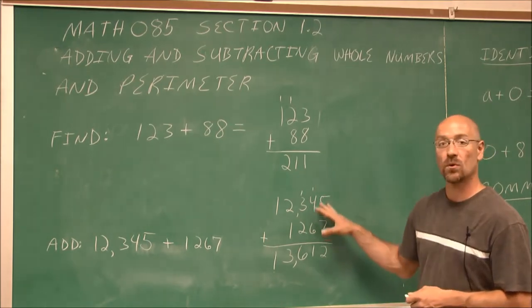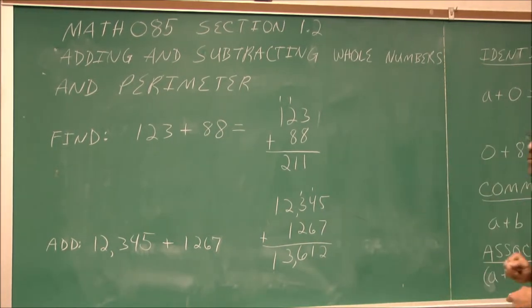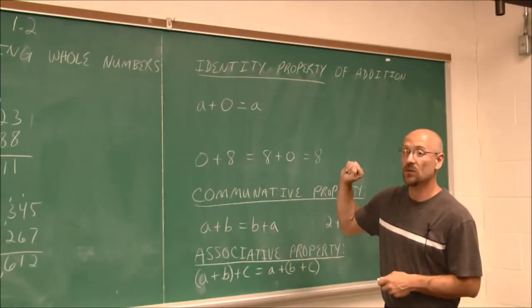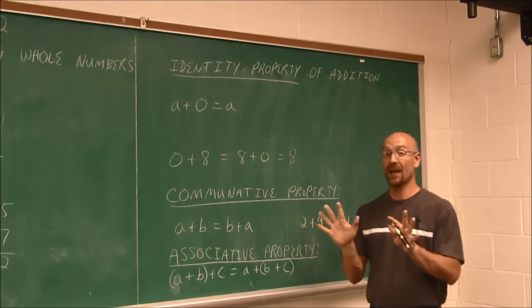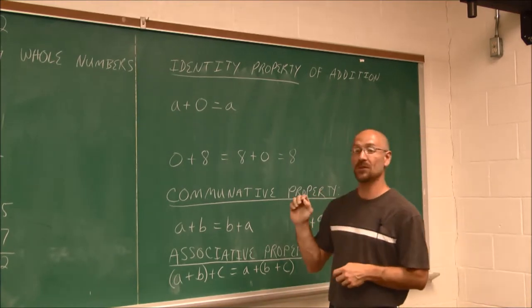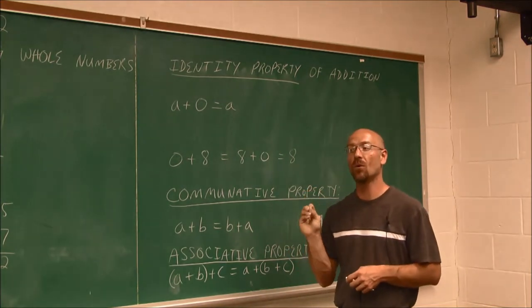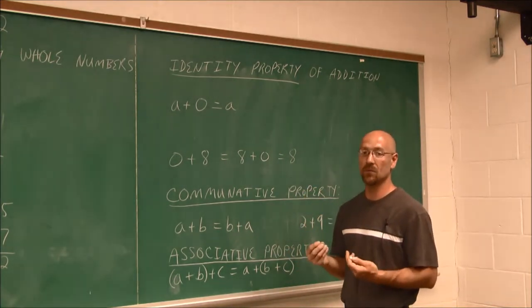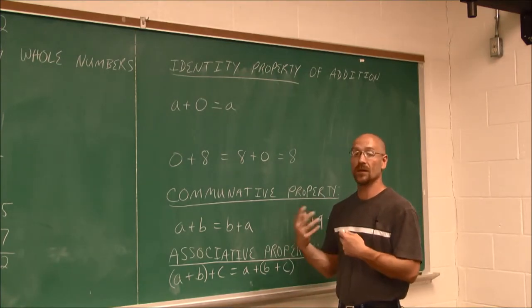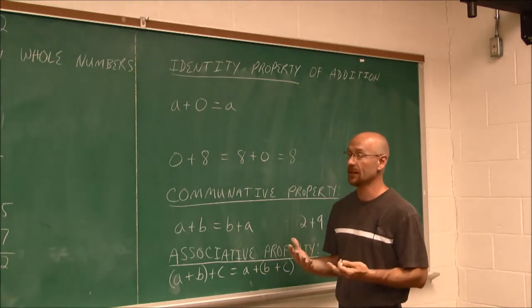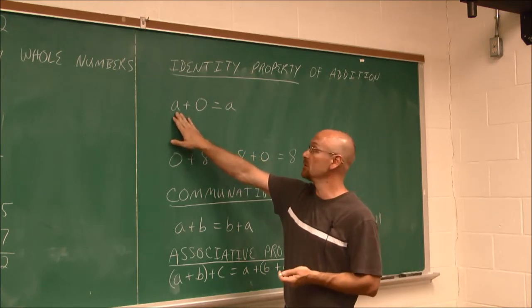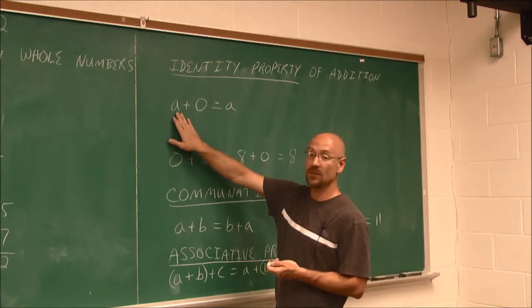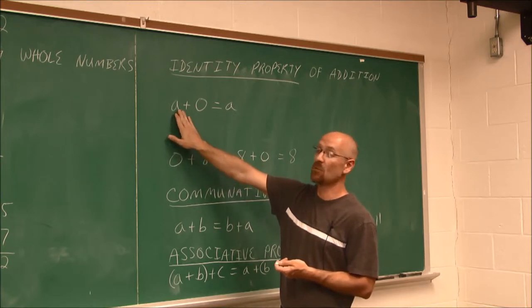Well, let's look at some properties of addition next. But before we do that, we have to introduce the term variable. Now, don't panic. It's OK. A variable is just defined as something that's holding the place of a number, a number we don't know or a number we're going to substitute in at a later time. As an example, this a here, generally we use letters of the alphabet as placeholders. So this a represents a number.